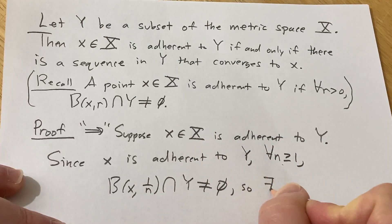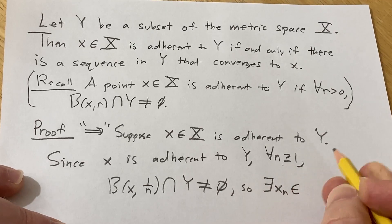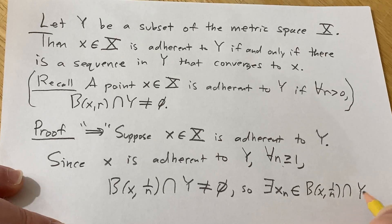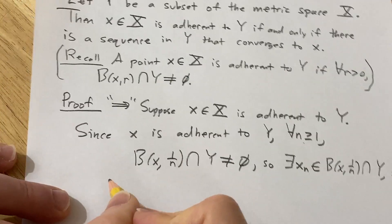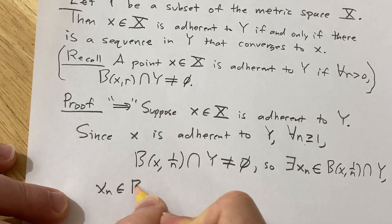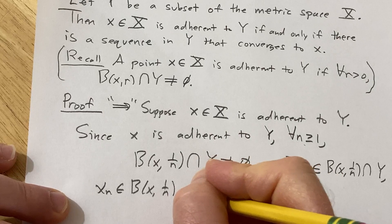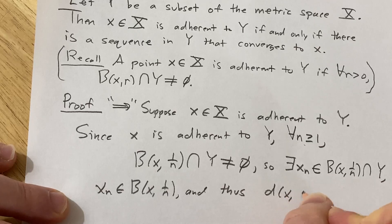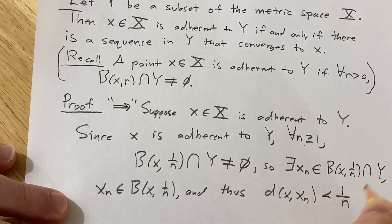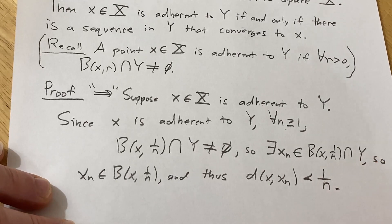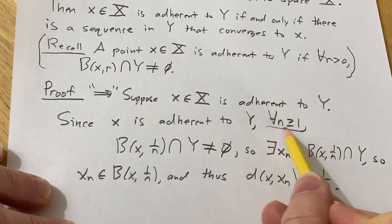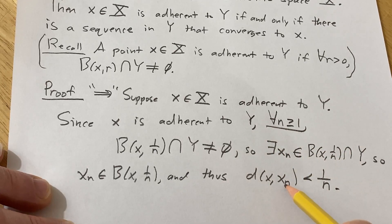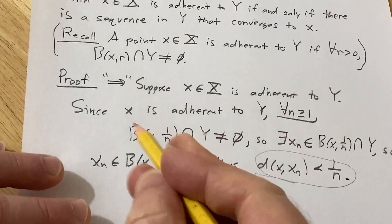So that means that this set is not empty. So that means that there exists x sub N in this intersection. So in particular, it's in this set here. So x sub N is in this set here. And thus, we have the distance between x and x sub N less than 1 over N. That's what it means for x sub N to be in this set. Let's think about what we've done.